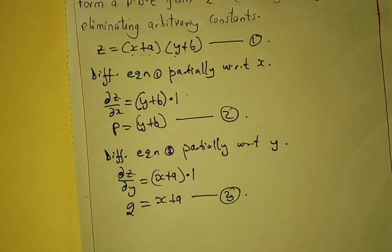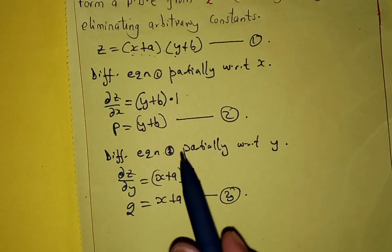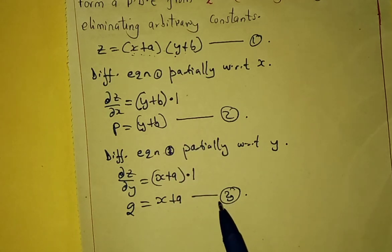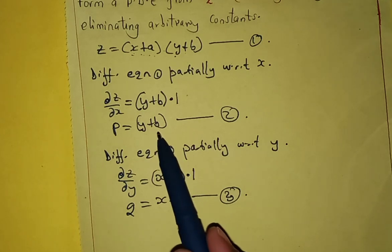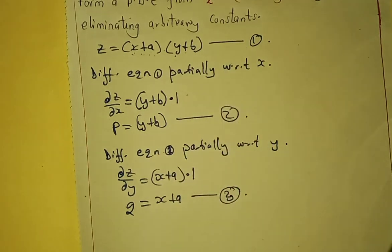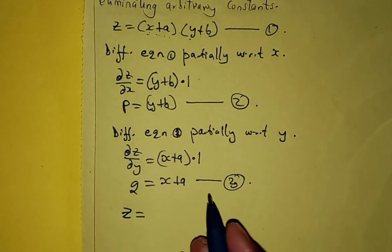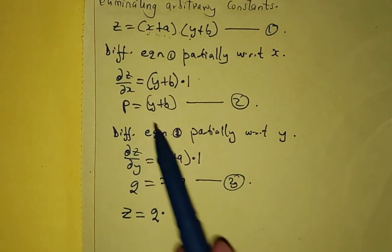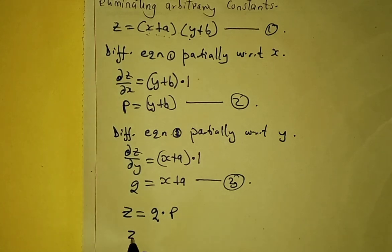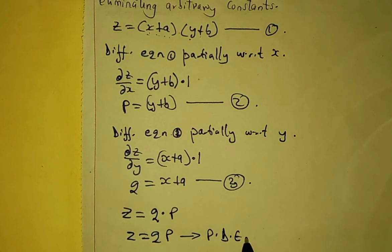To eliminate constant b and constant a from equations 2 and 3 respectively, we substitute for x plus a and y plus b in equation number 1. So we have z equals x plus a, which is q, times y plus b, which is p. Therefore, z equals q times p is our required partial differential equation.